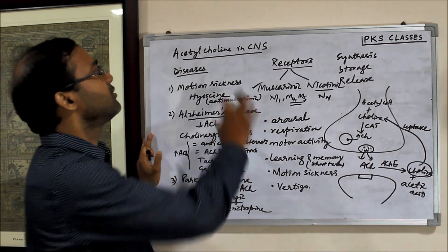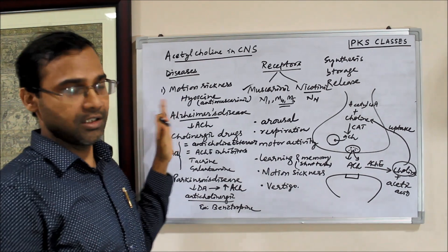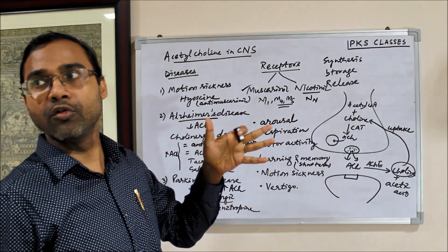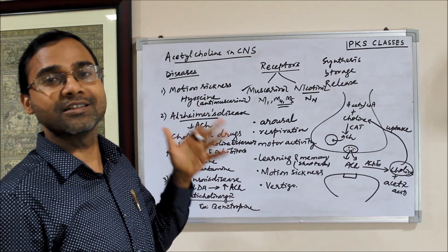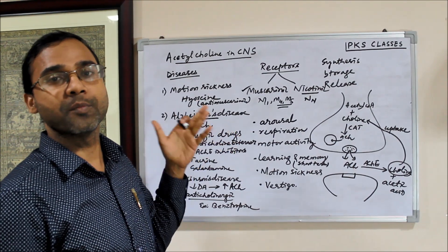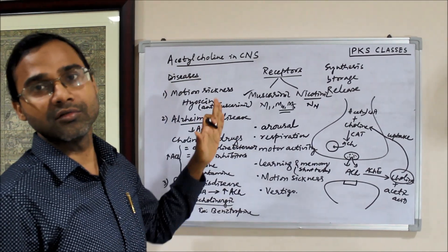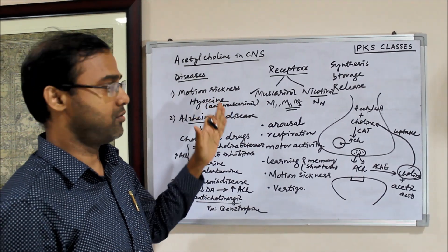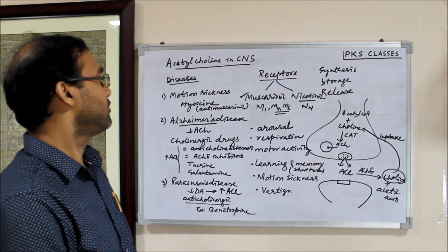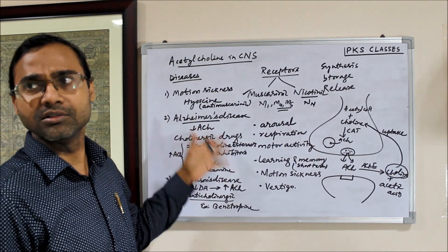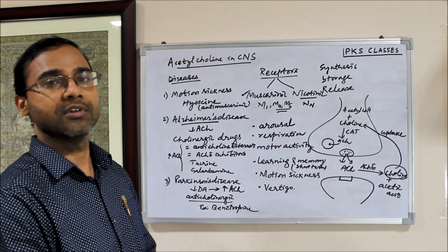Acetylcholine is distributed throughout the CNS — from the forebrain to the midbrain, to the brainstem, to the spinal cord. Everywhere, acetylcholine is found. We will discuss all these diseases in detail in the future. Thank you.